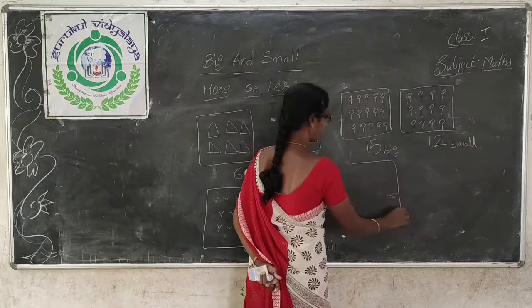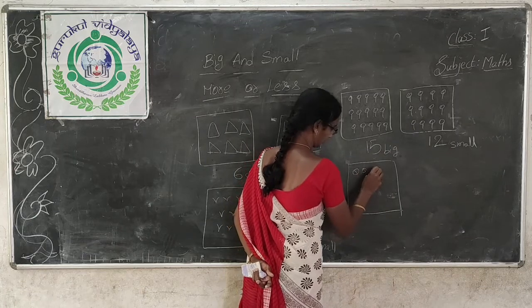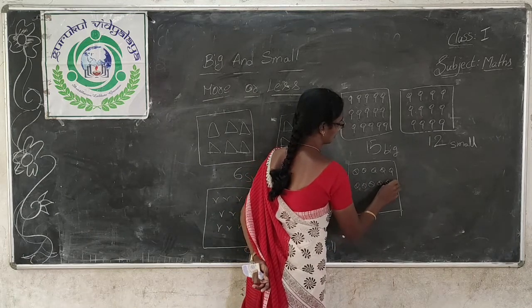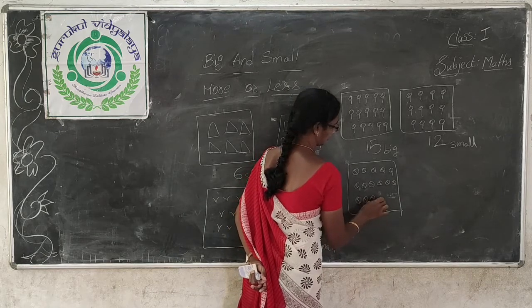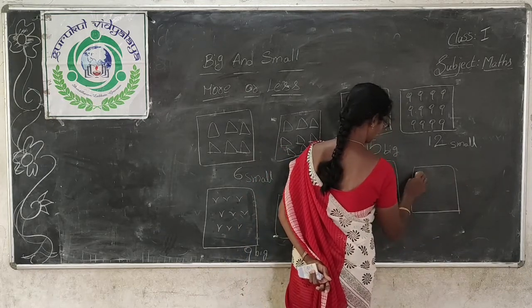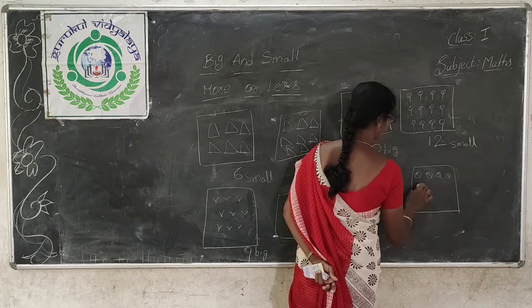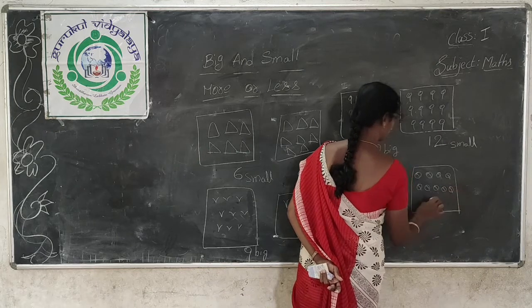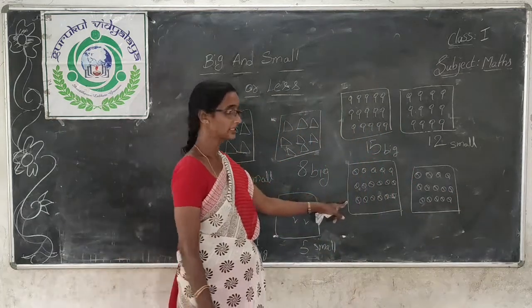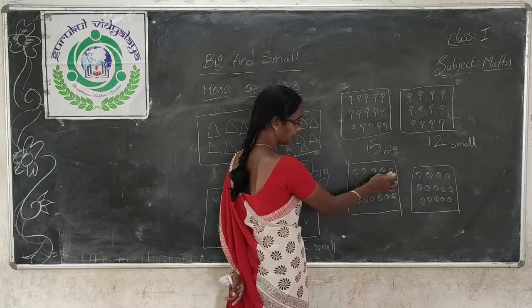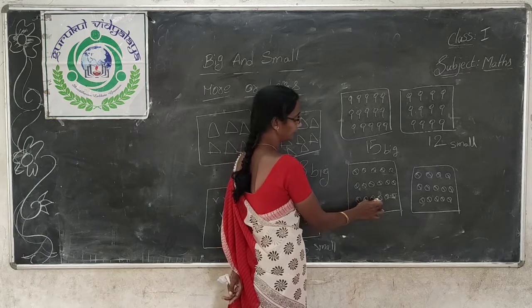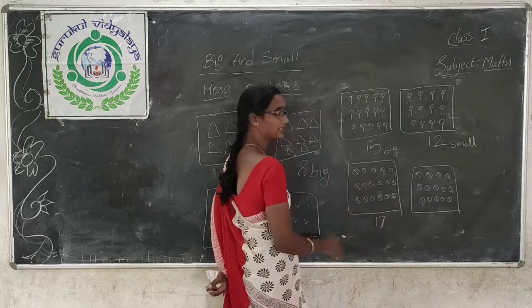Now let's see one more example. How many marbles are there in this group? Let's count: 1, 2, 3, 4, 5, 6, 7, 8, 9, 10, 11, 12, 13, 14, 15, 16, 17. Yes, 17 marbles are there in this group.